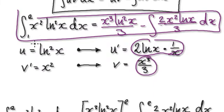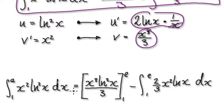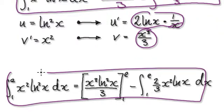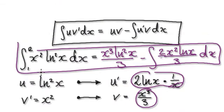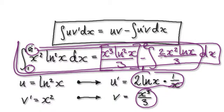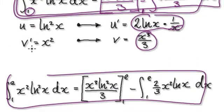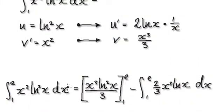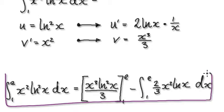This whole expression then becomes our integration by parts result. Because this is a definite integral problem, we need to evaluate it from 1 to e. So this whole thing becomes the evaluated definite integral with those bounds applied.